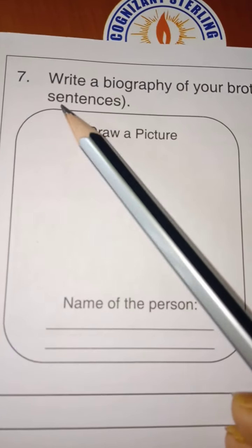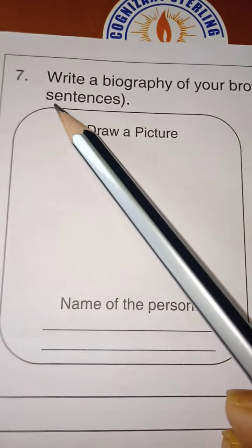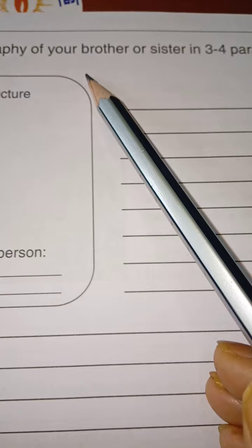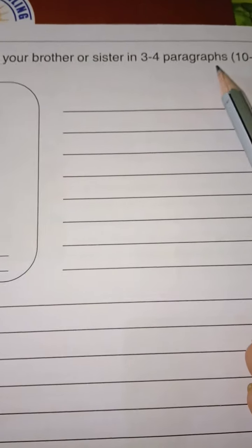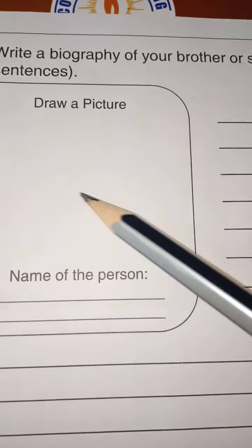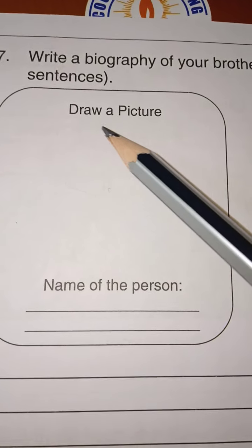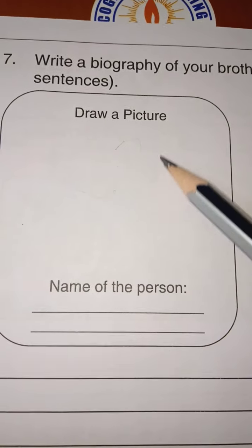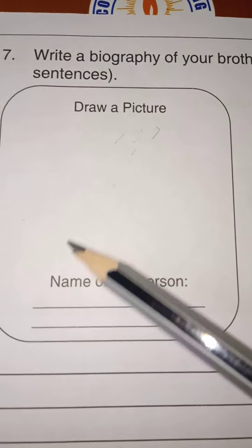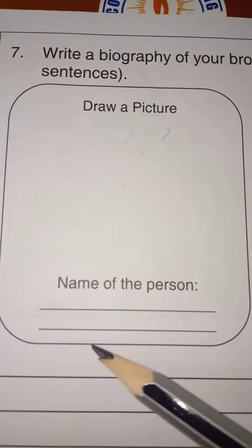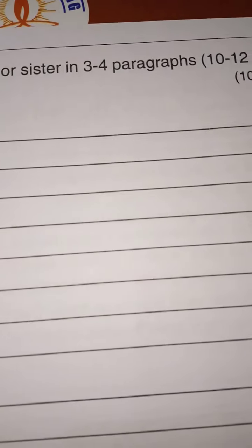Now, see question number 7. Write a biography of your brother or sister in 3 to 4 paragraphs. Means 10 to 12 sentences you have to write. You draw the picture. If you want to draw, write about your brother, you draw the picture of your brother. Or if you want to write about your sister, draw the picture of your sister and name you write it over here. Then you can start.